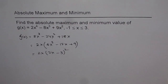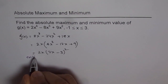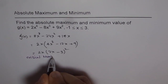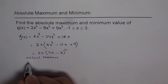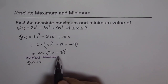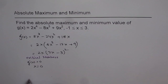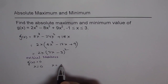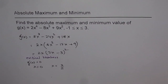From the factored form we can find the critical numbers. Critical numbers are where g'(x) equals 0 or is undefined. In this case g'(x) cannot be undefined, but it can be 0. So it equals 0 at x = 0 when the first factor is 0, or at x = 3/2. You equate each factor to 0 and solve for x — those are your critical numbers.